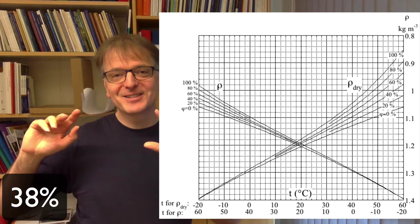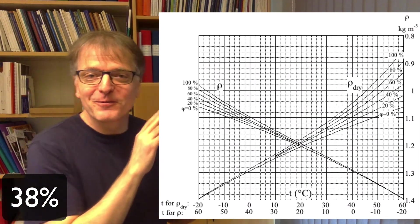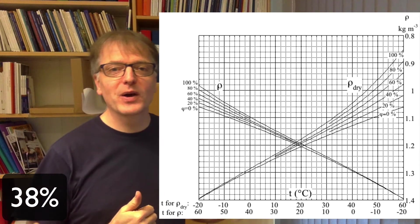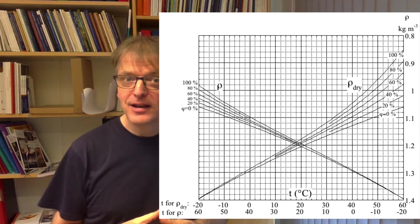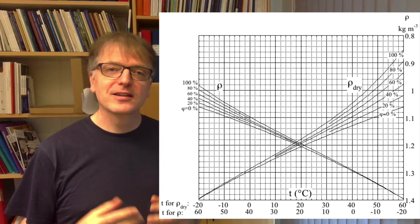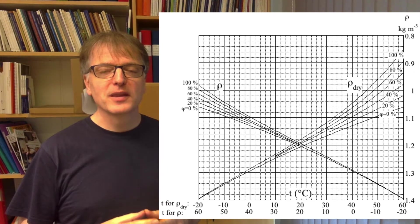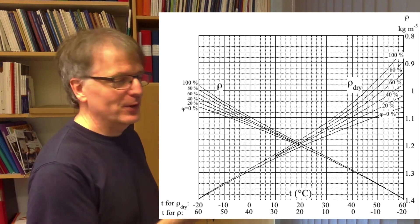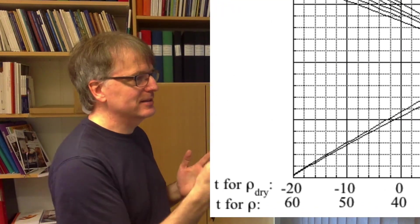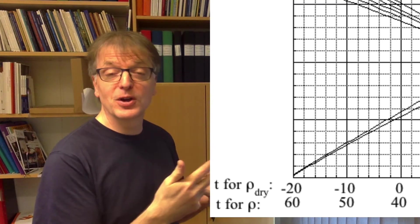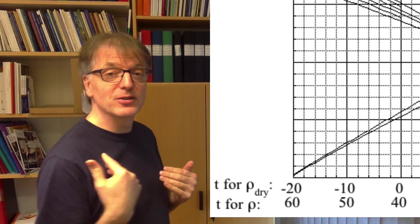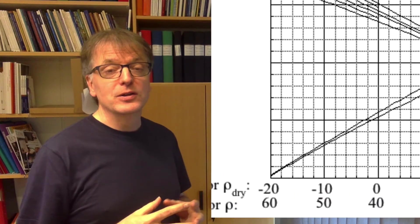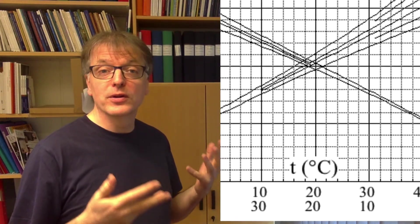And then we go to the density diagram, and that has two problems there. We have two x-axes, one increasing to the right and one increasing to the left. And then the other thing is that the y-axis is reversed. So we need to focus here. So first we think of which x-axis should I use? I'm trying to determine the dry density, so it's the dry density x-axis I should use.